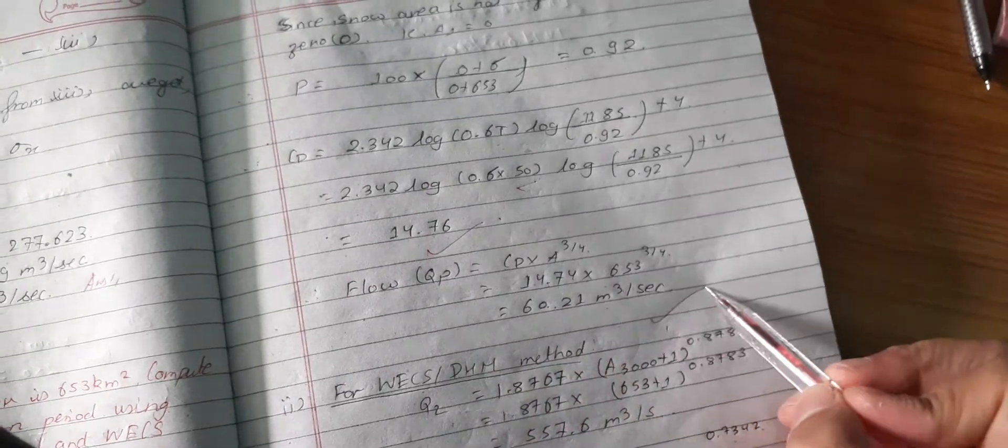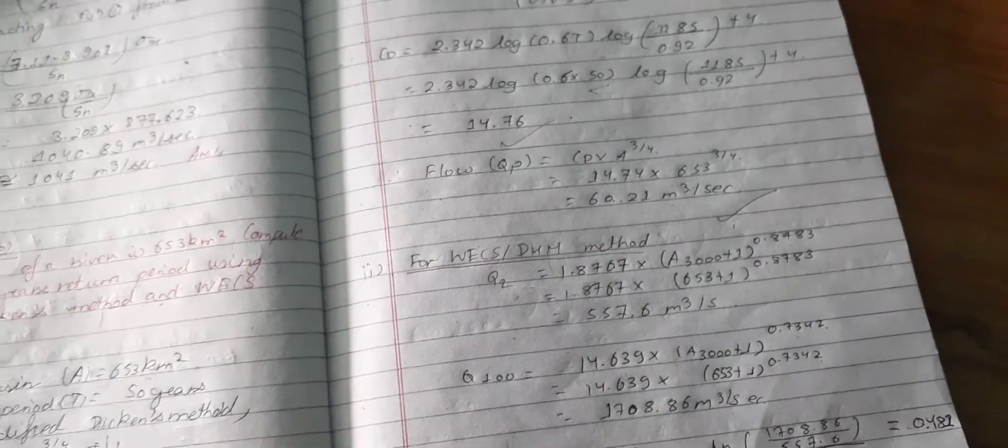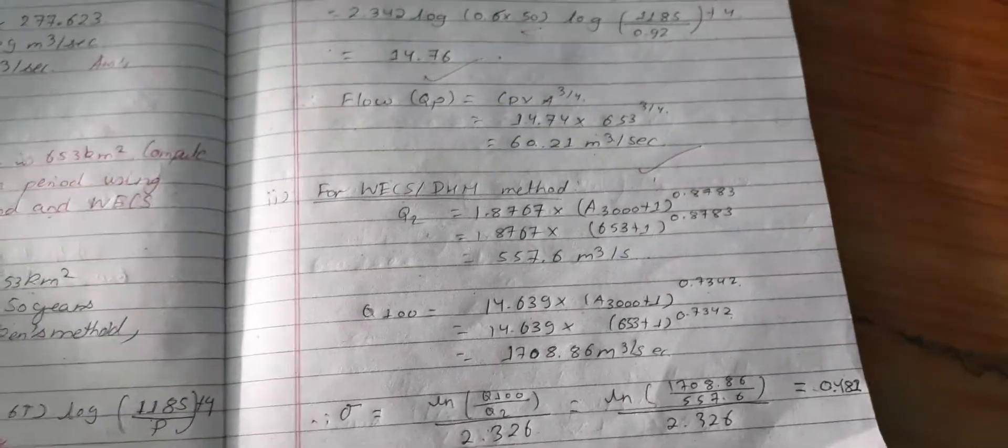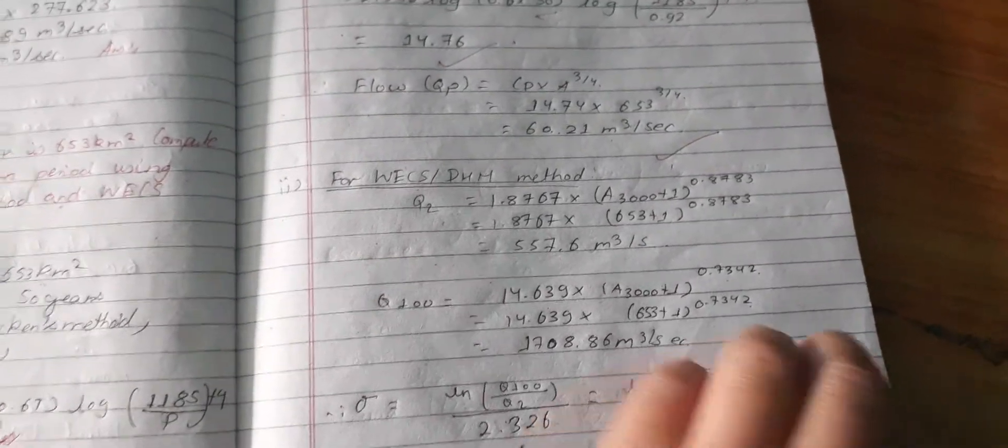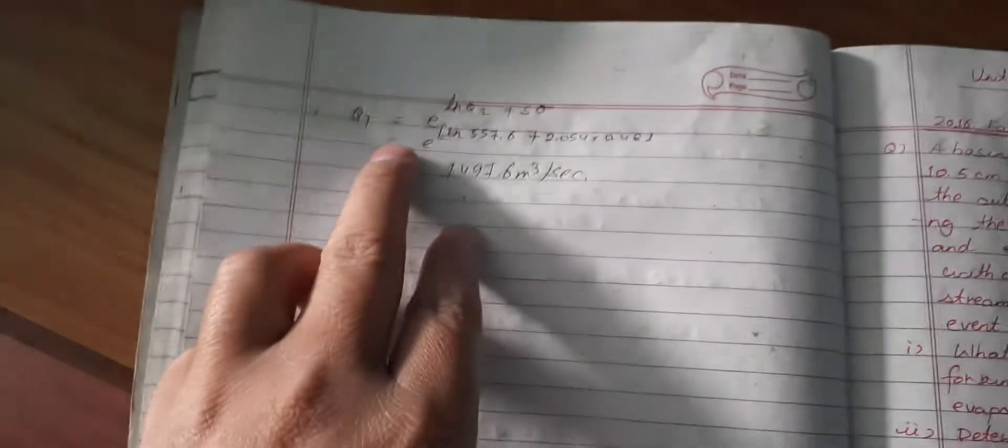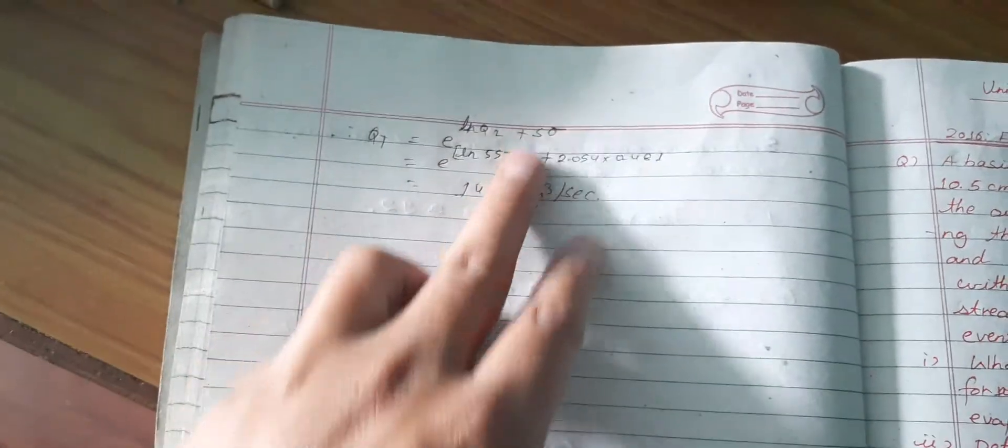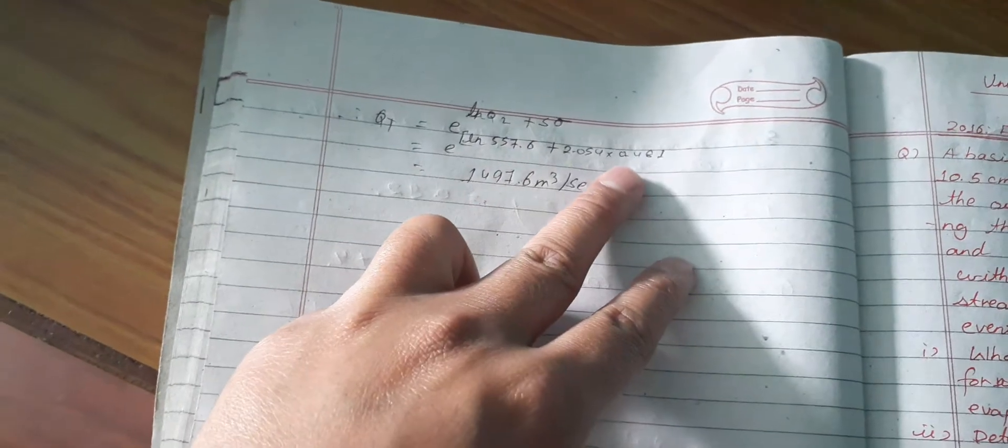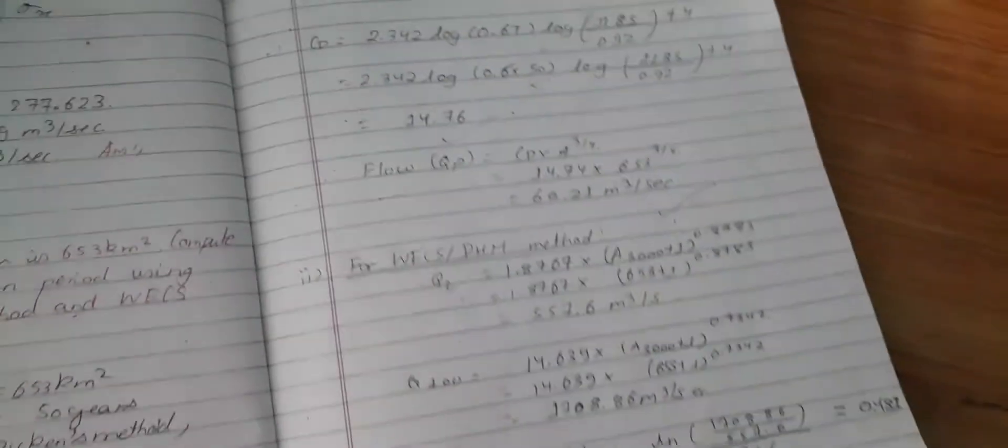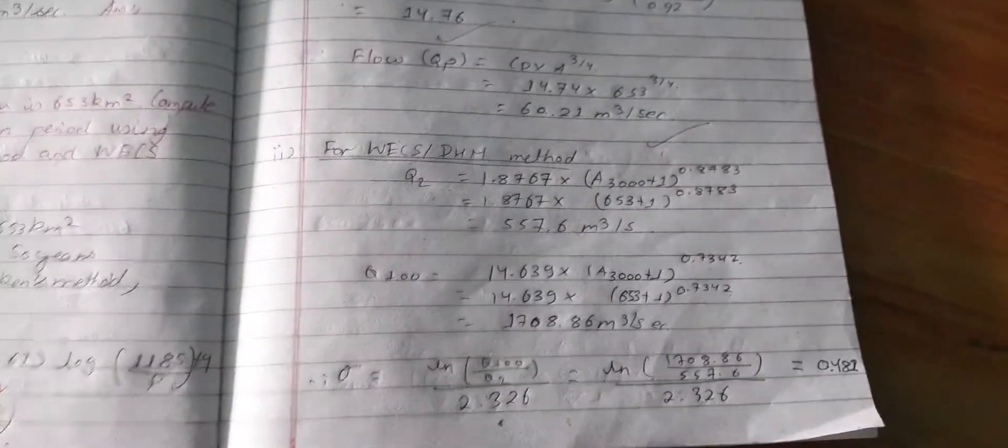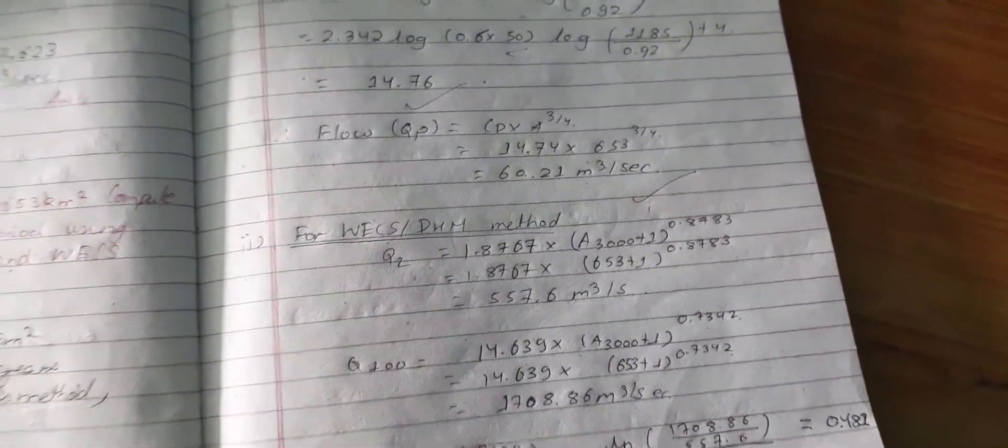Now we have the second part, that is WCS method. The discharge with a certain return period, that is Q = e^(ln Q₂ + S × σ). Now we need to find the parameters before placing them in the main formula.